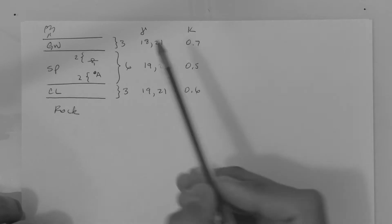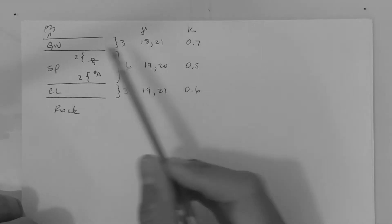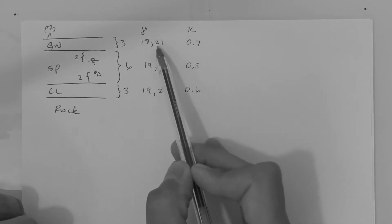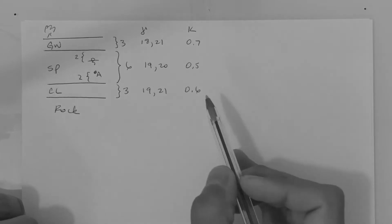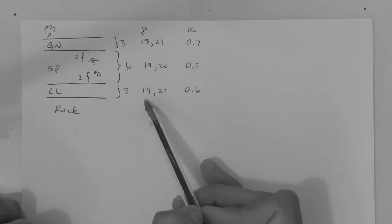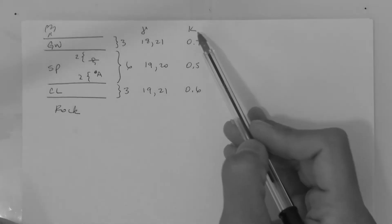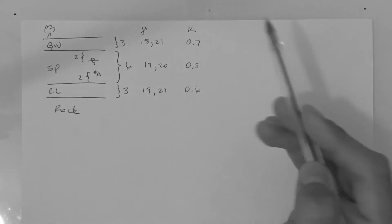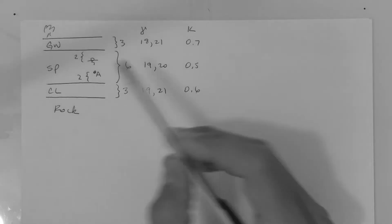The unit weights are given as follows: for the gravel layer 18 when dry, 21 when saturated; for the sand 19 when dry and 20 when saturated; for the clay 19 when dry and 21 when saturated. The lateral stress ratios are 0.7 for gravel, 0.5 for the sand, and 0.6 for the clay.